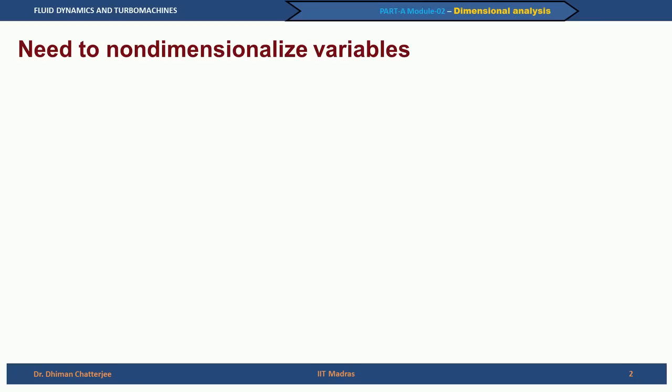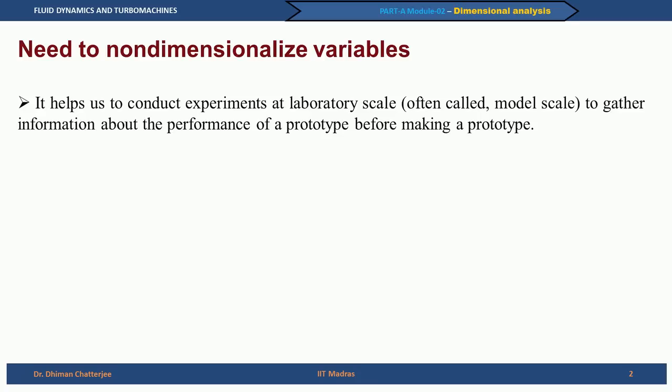Whenever you take up something, the obvious question that comes to our mind is: why should we do this? When we talk about dimensional analysis or non-dimensionalizing, we need to ask ourselves what is the need to non-dimensionalize the variables. Why cannot we be happy with dimensional variables? To understand this, let us see what the reasons are in brief. It helps us to conduct experiments at laboratory scale, called the model scale, and to gather information about the performance of a prototype before making the prototype.